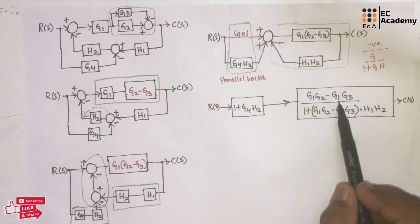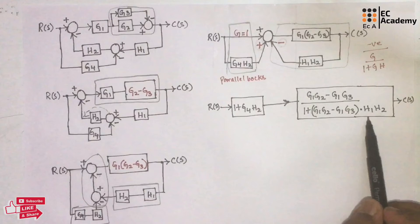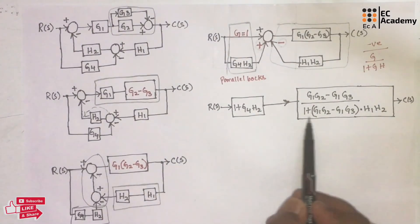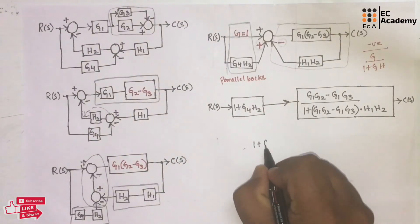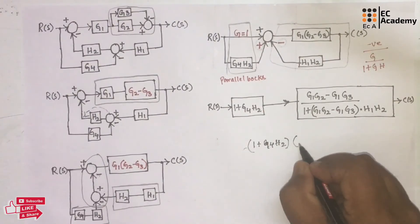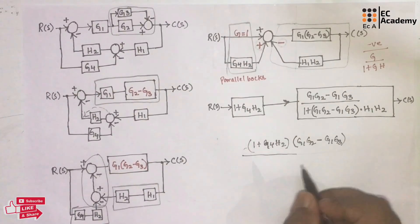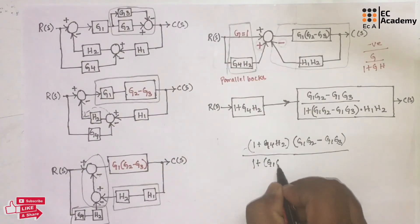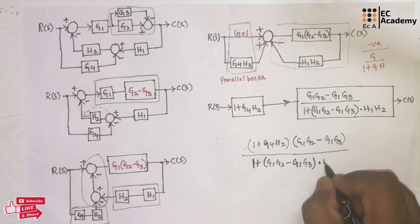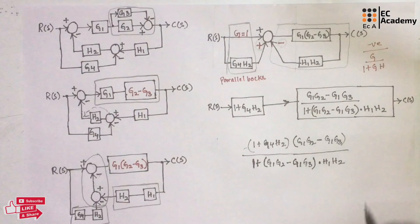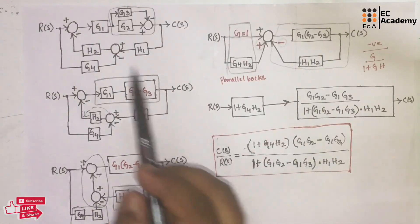We get minus G1·G3 divided by (1 plus G1·G2 minus G1·G3 times H1·H2). Since these two blocks are now in series, we can write the transfer function as (1 plus G4·H2) multiplied by (G1·G2 minus G1·G3), whole divided by (1 plus G1·G2 minus G1·G3 times H1·H2). This is C(s) divided by R(s), the overall transfer function of the given block diagram.